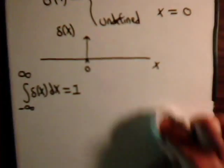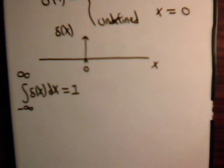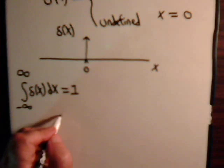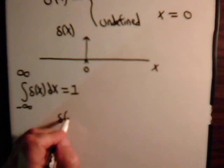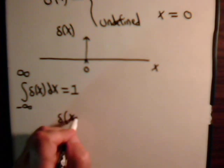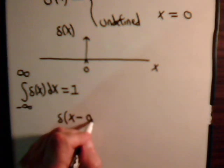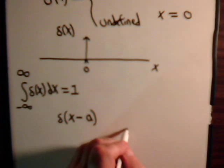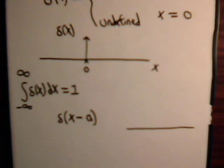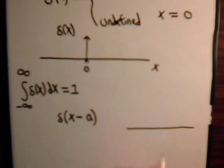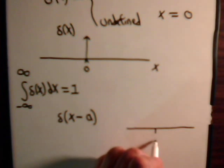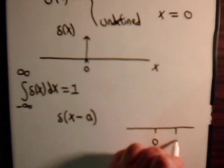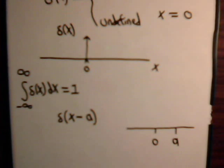Now, the Dirac delta function, say of x minus a constant, what would a graph of this look like? So, here is the x-axis, here is 0, here is the point a.